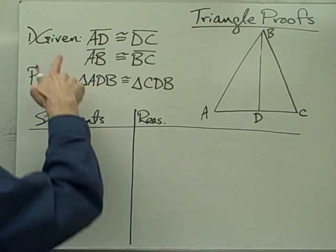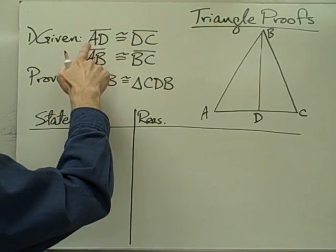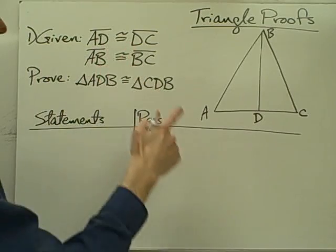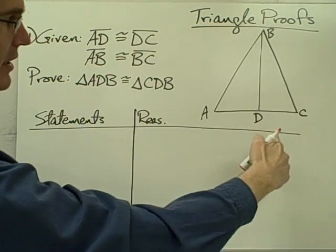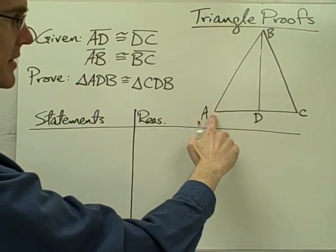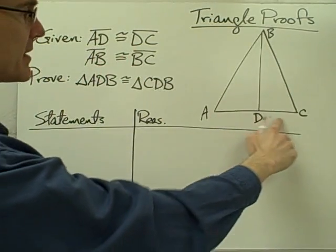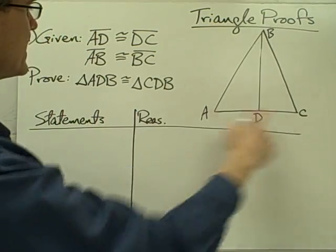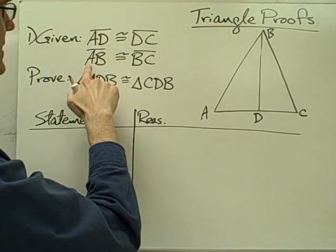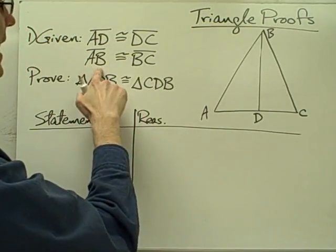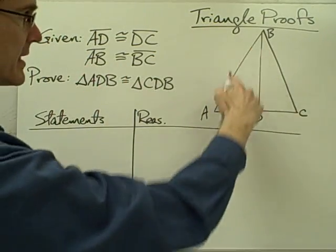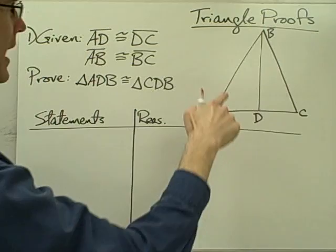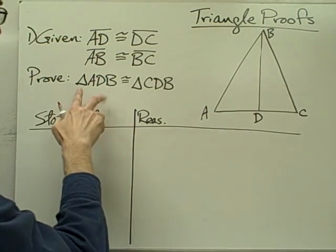It says: given segment AD is congruent to segment DC — we see in our figure that this is segment AD and this is segment DC — and segment AB is congruent to segment BC, so AB and BC.